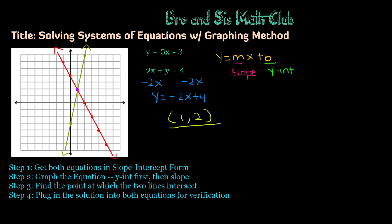However, we still have to plug in the solution into both equations for verification, which is step 4. So we're going to use this coordinate, which is x equals 1 and y equals 2, and plug it into our original equations to see if they work out. For the first equation, it's y equals 5x minus 3. So it would be 2 equals 5 times 1 minus 3.